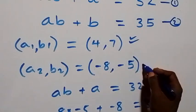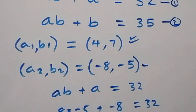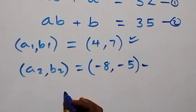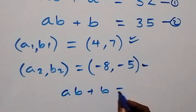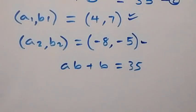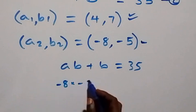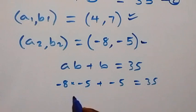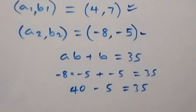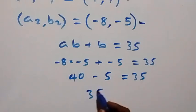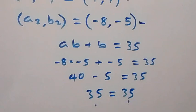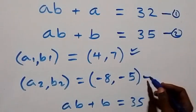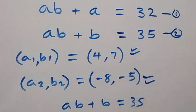Also checking the second solution in equation 2, ab plus b equals 35: minus 8 times minus 5 plus minus 5 equals 40 minus 5 equals 35, which equals 35. Left-hand side equals right-hand side, so the second solution also satisfies equation 2. Thus we have our two solution sets.